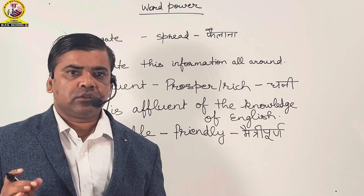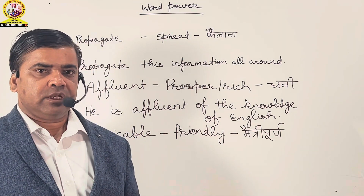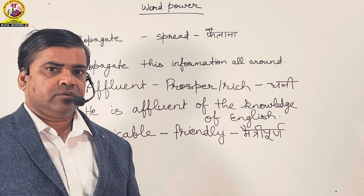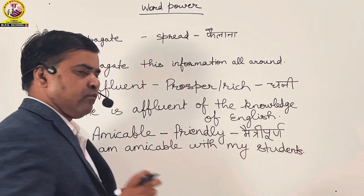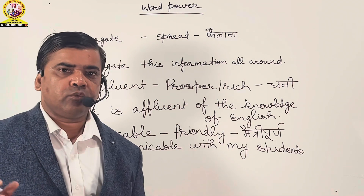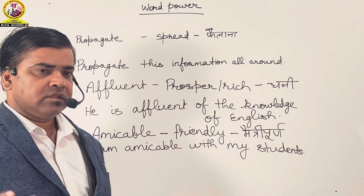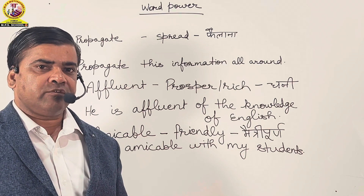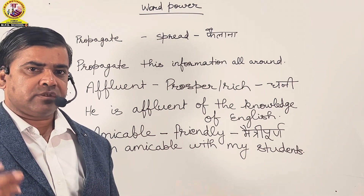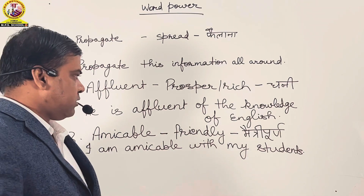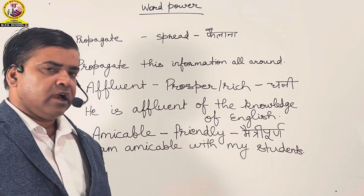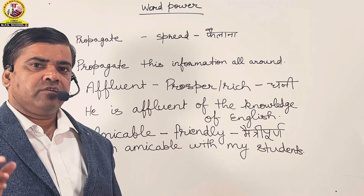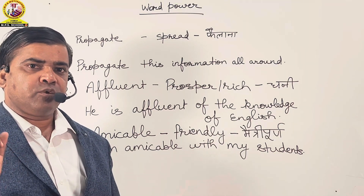Our third word is 'Amicable'. It means friendly — maitri purna. I have used the word amicable in a sentence. The sentence is: I am amicable with my students. Arthat, main apne vidyarthiyon ke saath friendly hoon, maitri purna hoon.